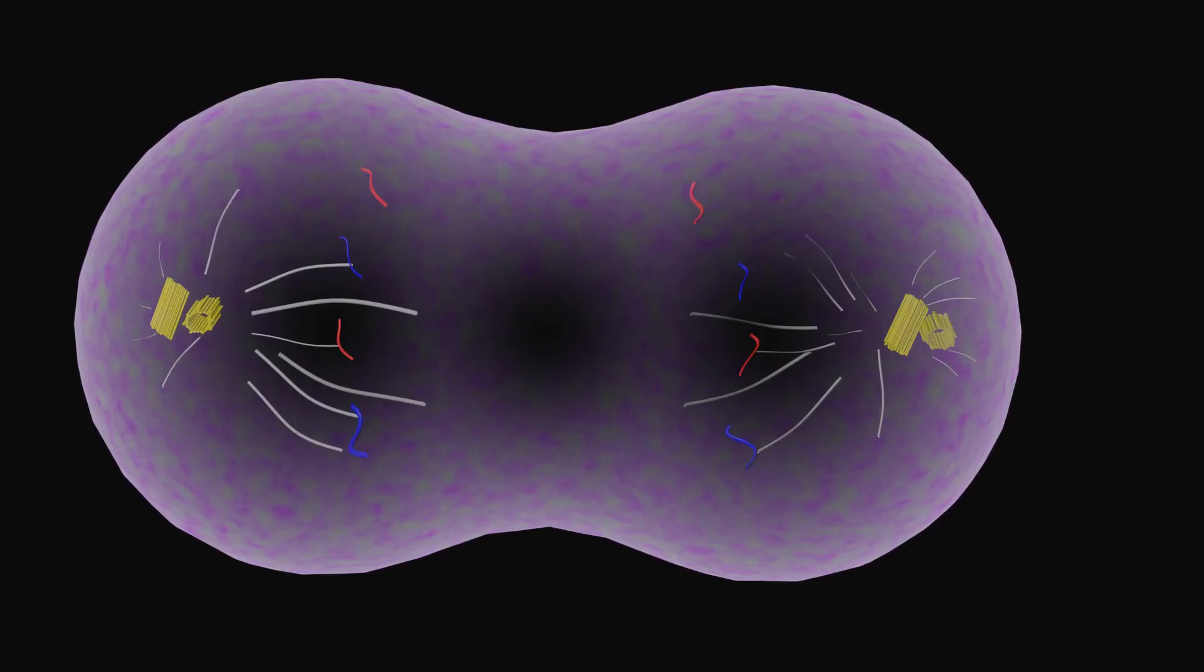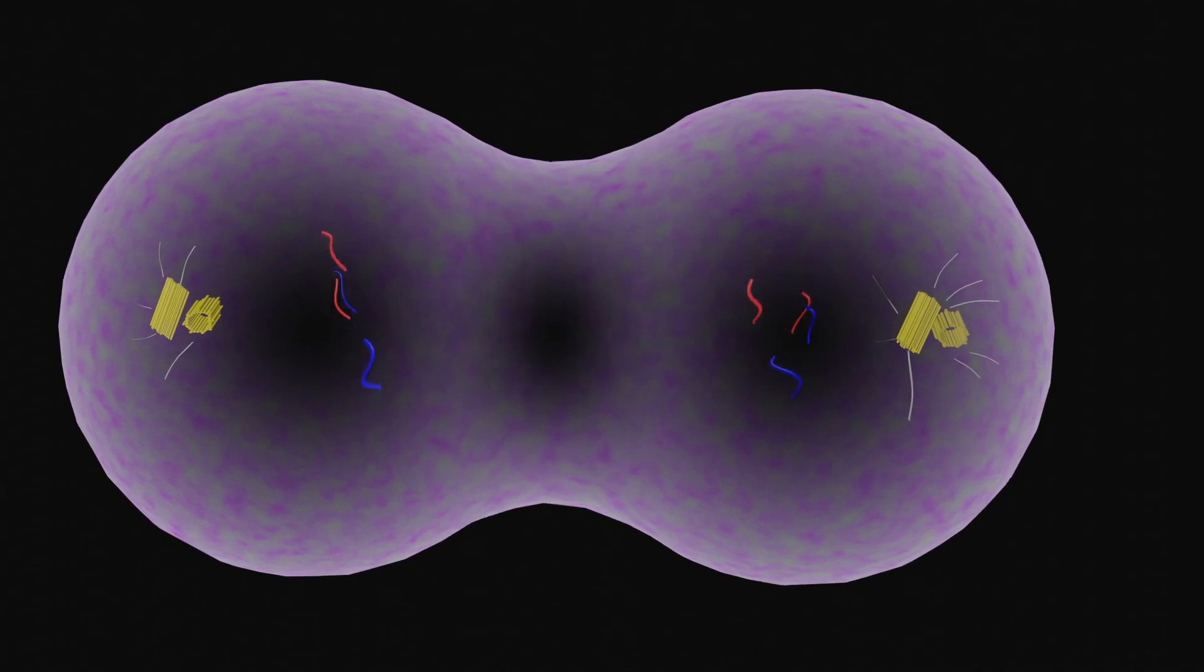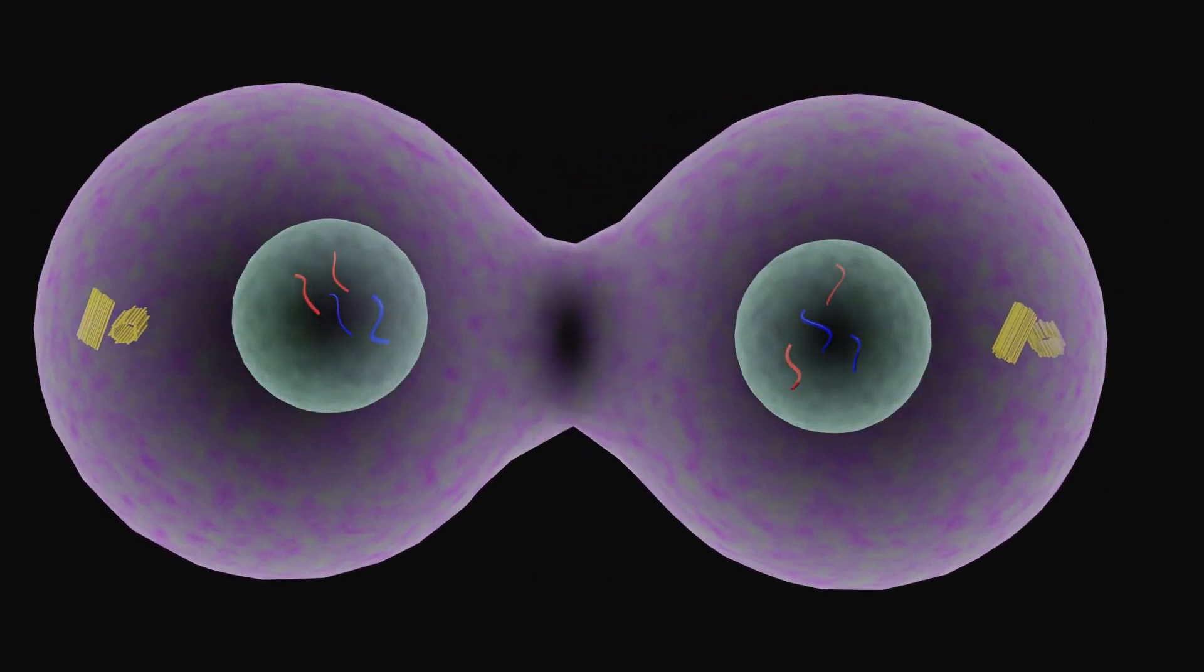In telophase, the mitotic spindle is broken down into its building blocks. Two new nuclei form, one for each set of chromosomes. Nuclear membranes reappear.